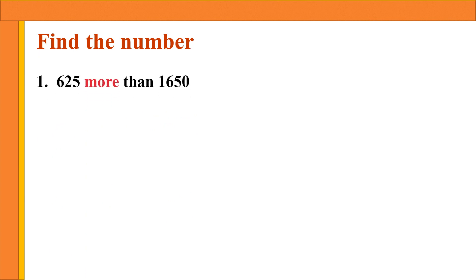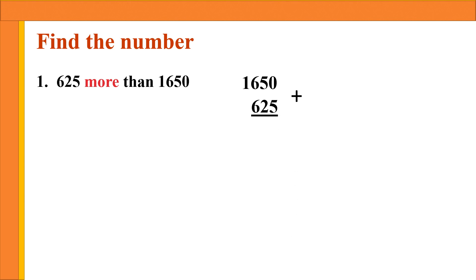Find the number. First question: 625 more than 1650. More than means you have to add. Add 625 with 1650. It is preferable to write the bigger number first, so we will write 1650 first. Then below that write 625 under the correct place, put the addition sign, and start adding from the right side. You will get 2275.